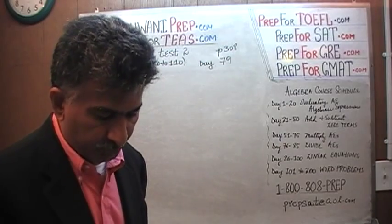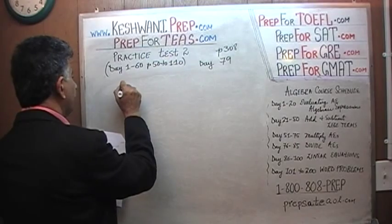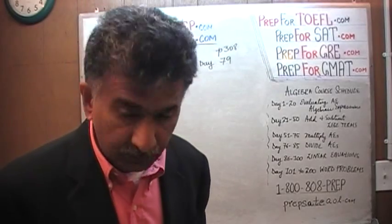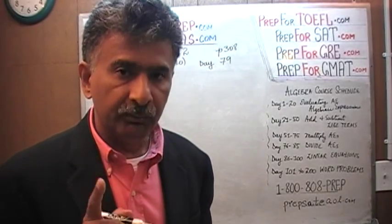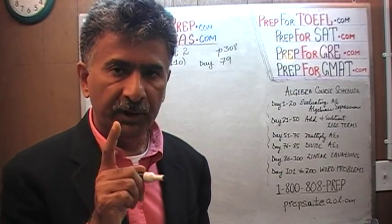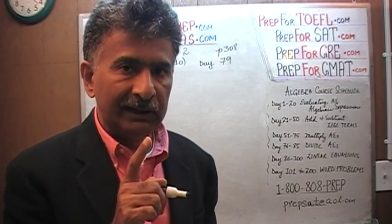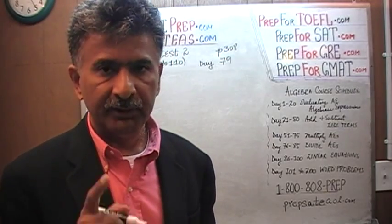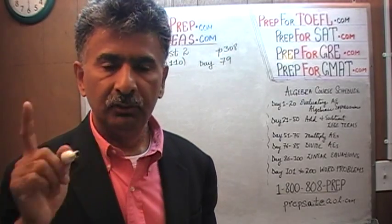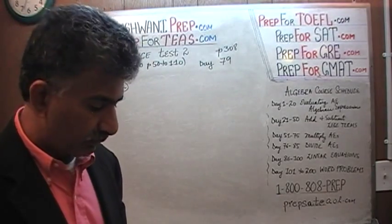The last two questions on page 308 are what we have to do — number 22. On number 22 we are being asked to arrange these numbers. Read very carefully, because you have to pay attention as to whether they are asking us to arrange them in ascending order or descending order — from least to the greatest, or from the greatest to the least. Follow me.